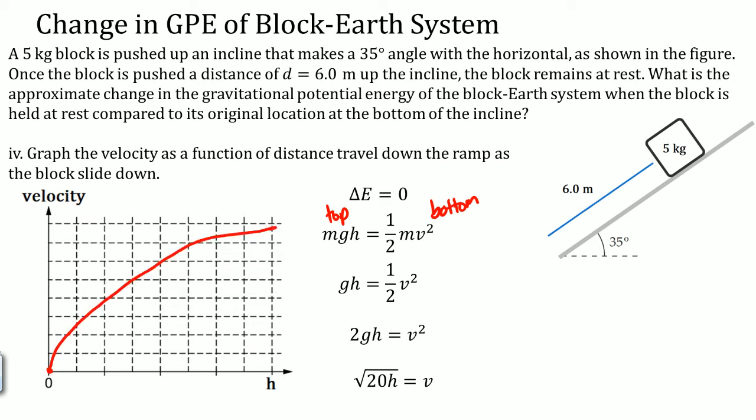Right, this is the behavior of a function that is equal to the square root of x. That's how it behaves. So that is how the velocity is going to go. It's going to go super fast, then it's going to slow down.